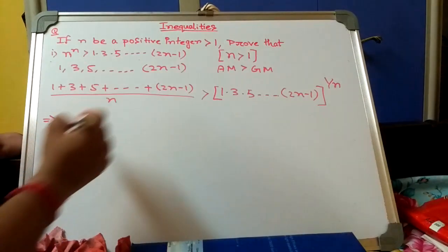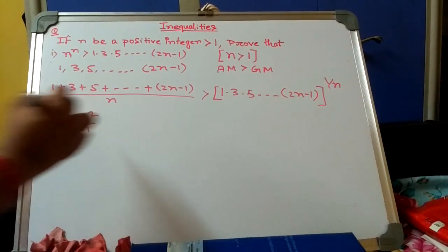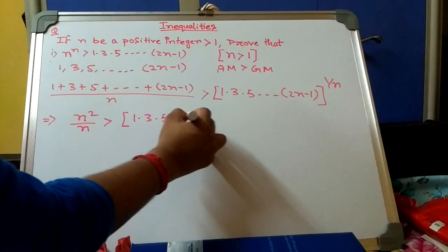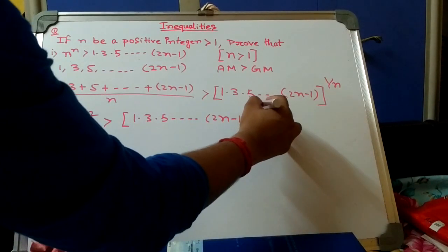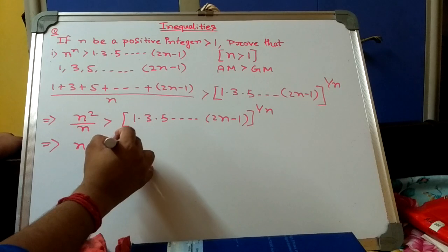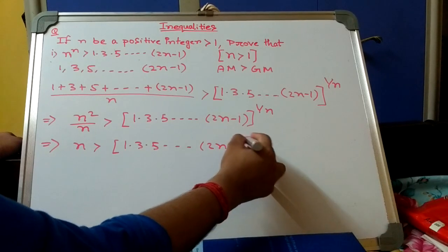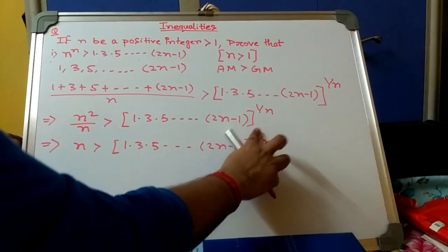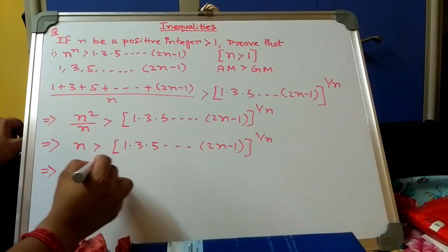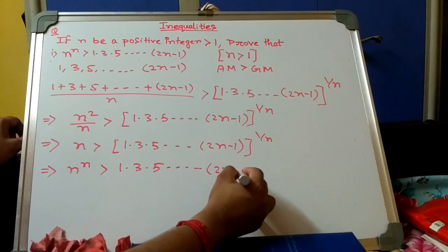The sum of n odd natural numbers is n², so n²/n ≥ (1 · 3 · 5 · ... · (2n-1))^(1/n), which implies n ≥ (1 · 3 · 5 · ... · (2n-1))^(1/n). Finally, raising both sides to the power n, n^n > 1 · 3 · 5 · ... · (2n-1). Proved.